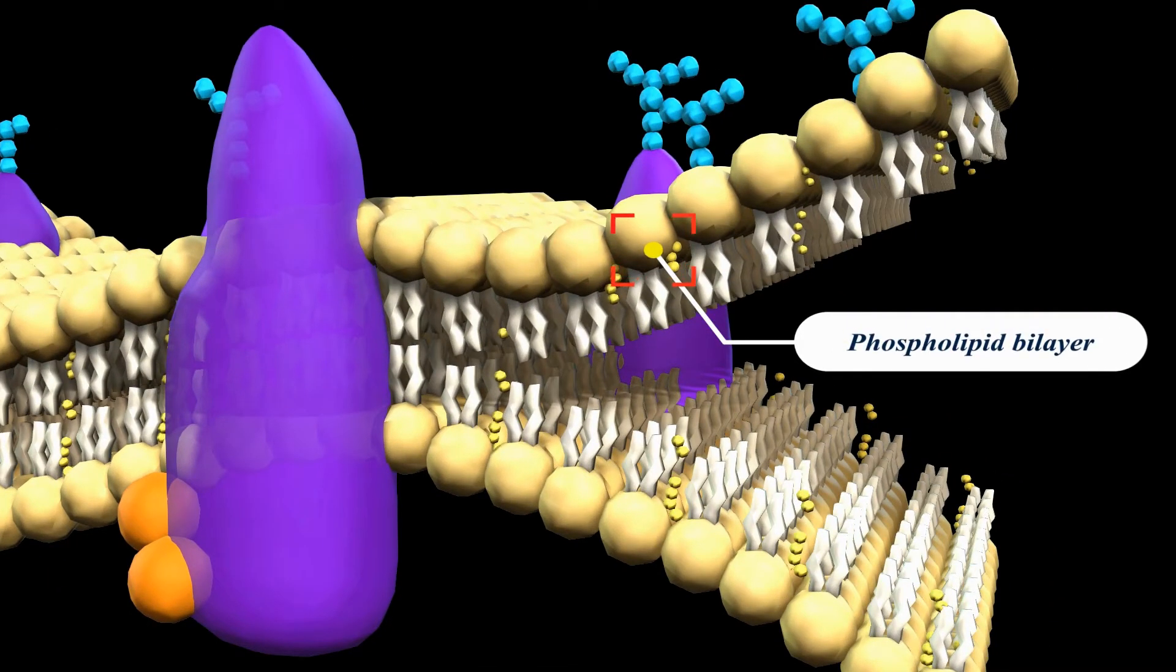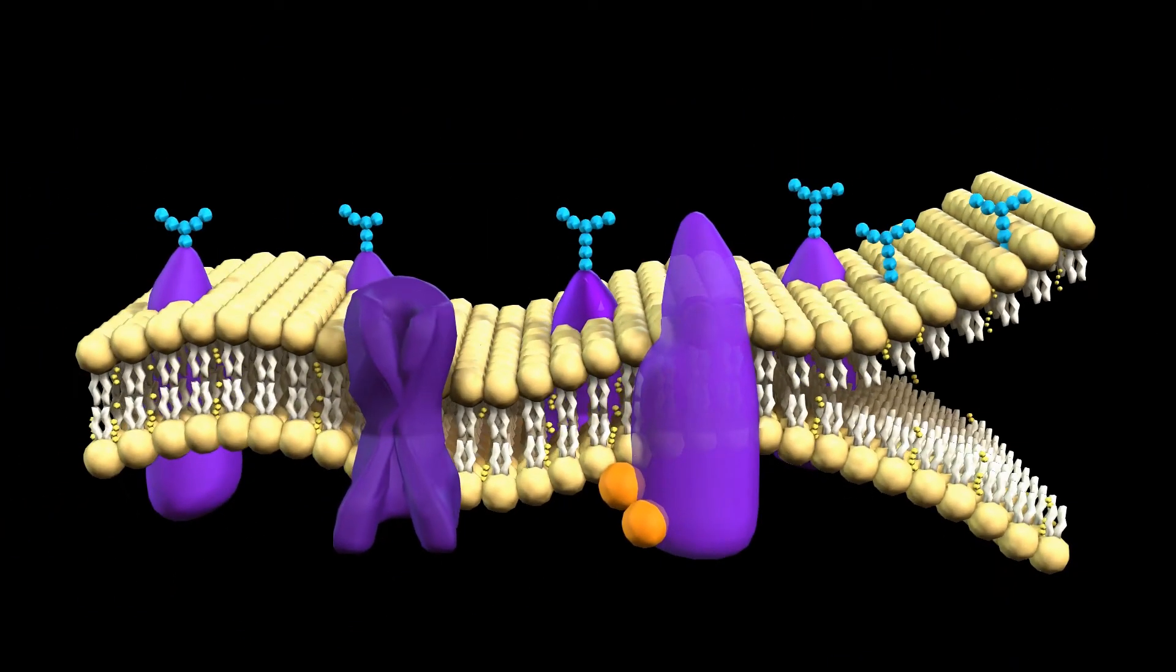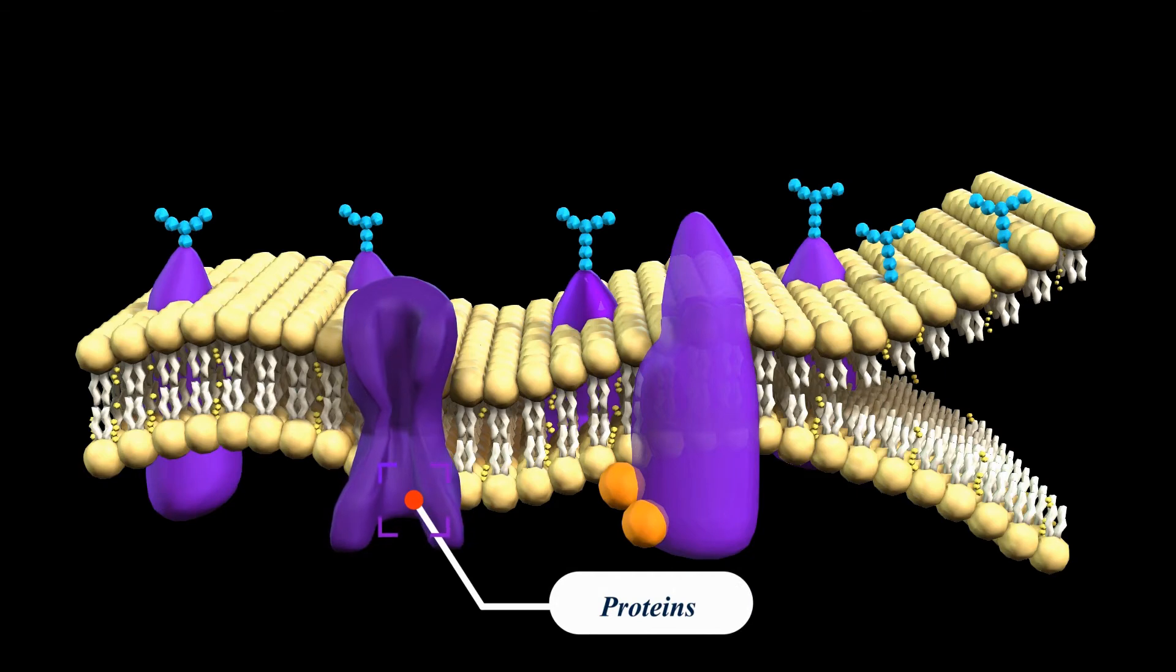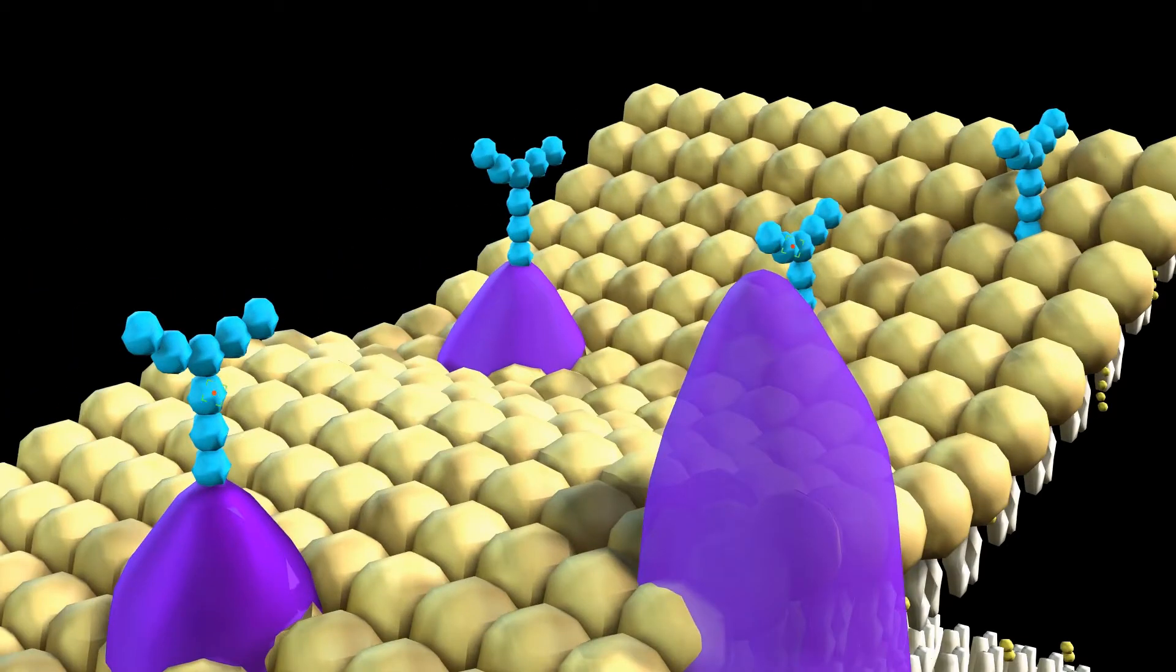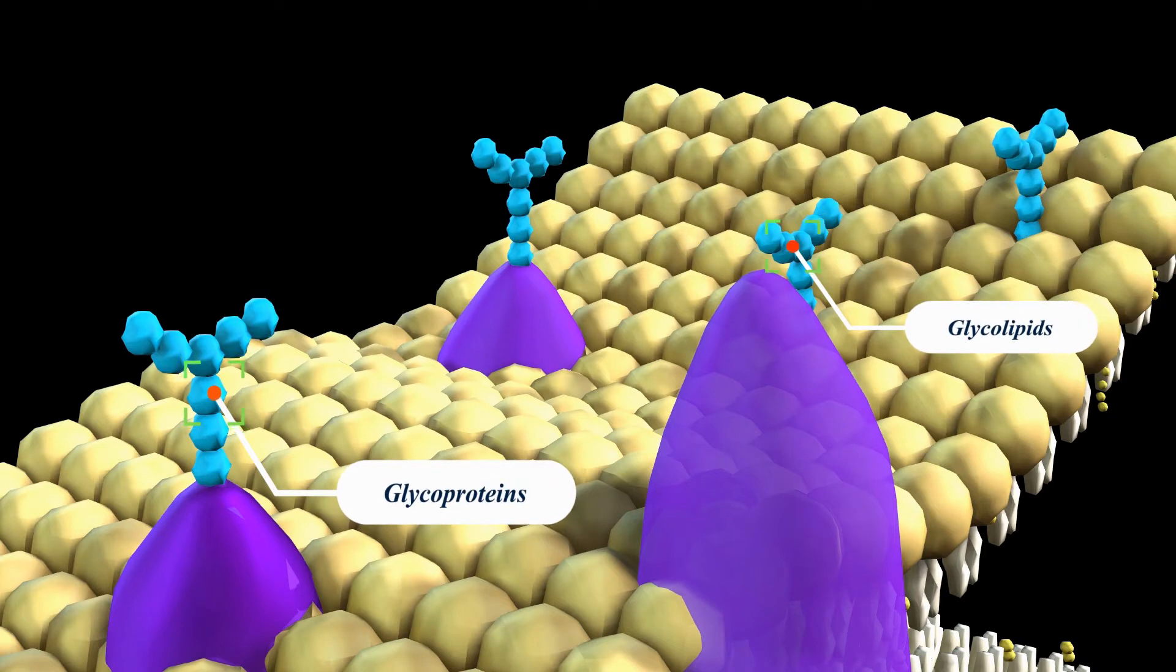The plasma membrane consists of a phospholipid bilayer, proteins embedded in the phospholipid bilayer, carbohydrates—some attached to proteins forming glycoproteins, others attached to lipids forming glycolipids—and cholesterol embedded in the inner part of the phospholipid bilayer.